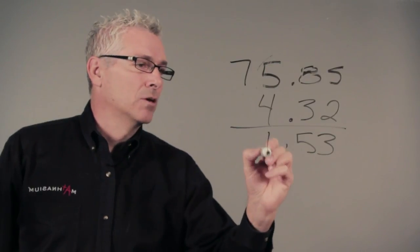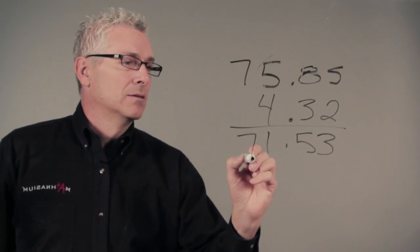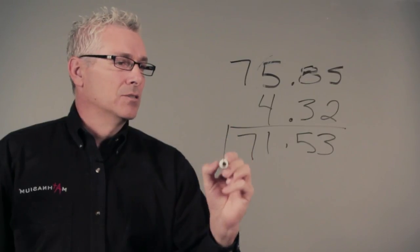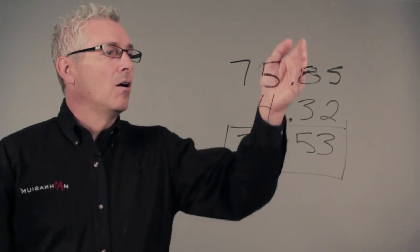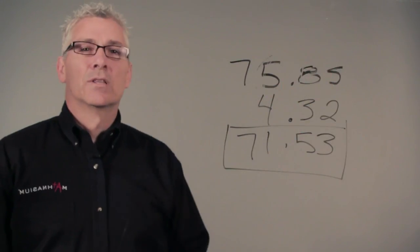Four ones from five ones, which gives me a one, and zero from seven. So my answer to this particular subtraction problem is seventy-one point five three. All the place values are lined up exactly with each other.